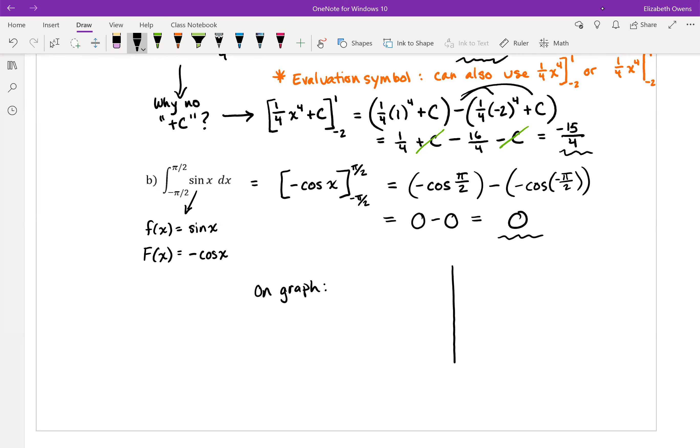So on a graph, let's make a nice little sine function. I'm going to call this pi over 2, pi, that would be negative pi over 2 and negative pi.